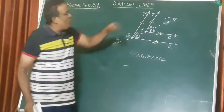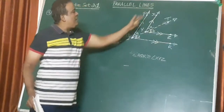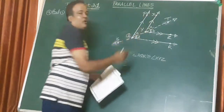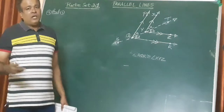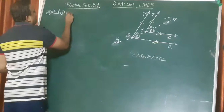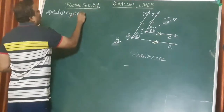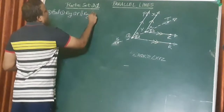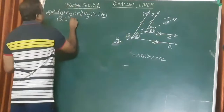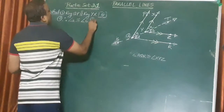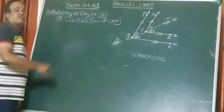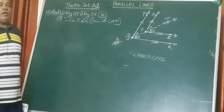Now, what kind of angles are A and C? This is the transversal and these two are parallel lines. A and C are both above — on the same side of the transversal — so they are corresponding angles. Given that ray QP is parallel to ray YX, therefore angle A is equal to angle C — converse of the corresponding angle test.